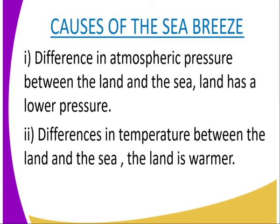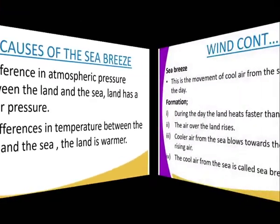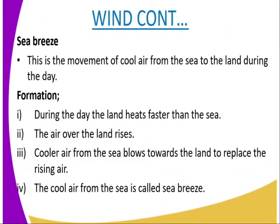The land is warmer than the sea. Since the land is warmer, the air becomes lighter and rises up. The cold air from the sea then comes to occupy the space created by the warm rising air over the land, and that is where the sea breeze takes place. The sea breeze is the movement of cool air from the sea to the land during the day. During the day, the land heats faster than the sea.